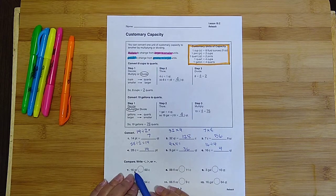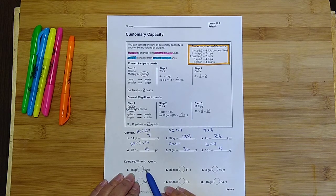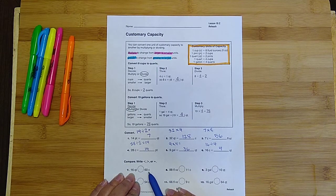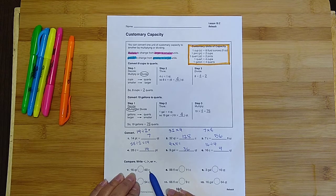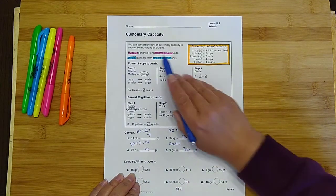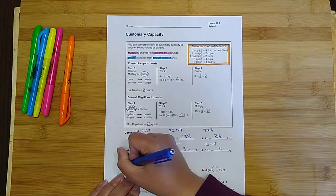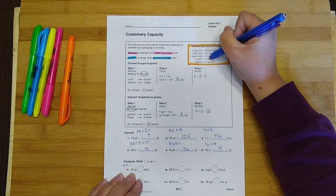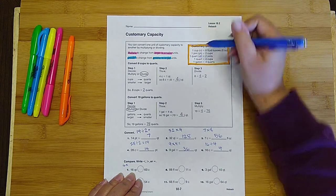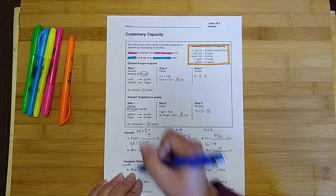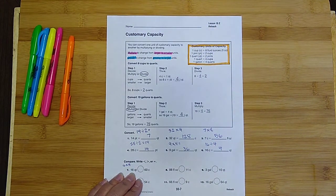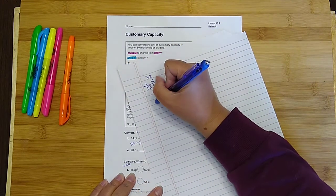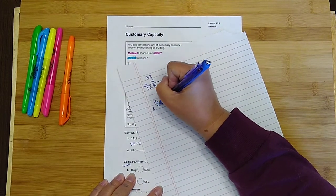So 16 quarts converted into cups. If I want to go from quarts to cups, larger to smaller, I want to multiply. So I would go 16 times, and then I'm going to look up here. I have four cups in one quart. So I would go 16 times 4. And let's do that math. 16 times 4.